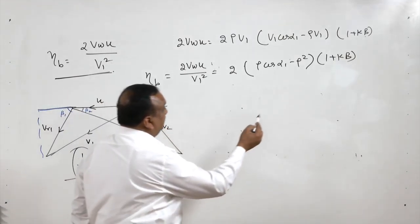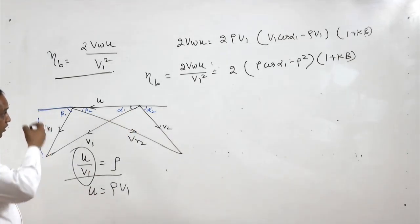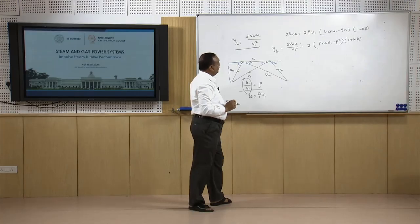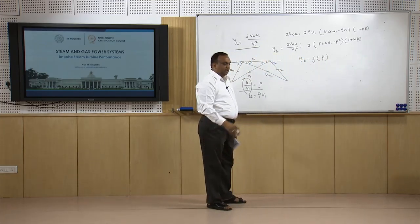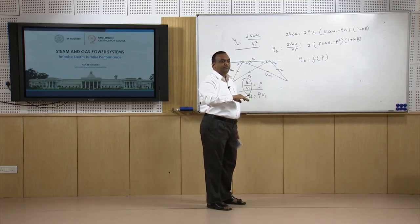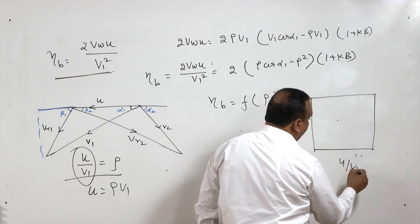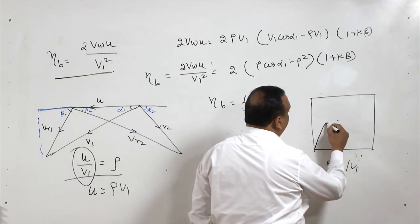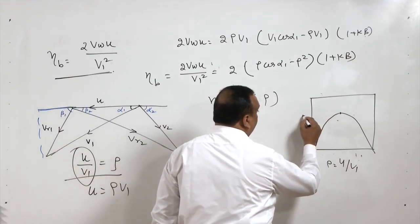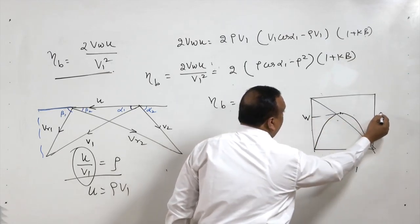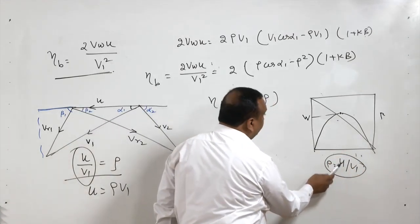As discussed in an earlier lecture, when we increase ρ (= u/V1), work output increases, attains a maximum, and then decreases. When u = V1 there is no force, and when u = 0 force is maximum. Now we differentiate the blade efficiency equation with respect to ρ: dη_b/dρ = 2(cos α1 − 2ρ)(1 + KB). The second derivative d²η_b/dρ² = −2(1 + KB)·2 = −4(1 + KB), which is negative since K and B are constants.